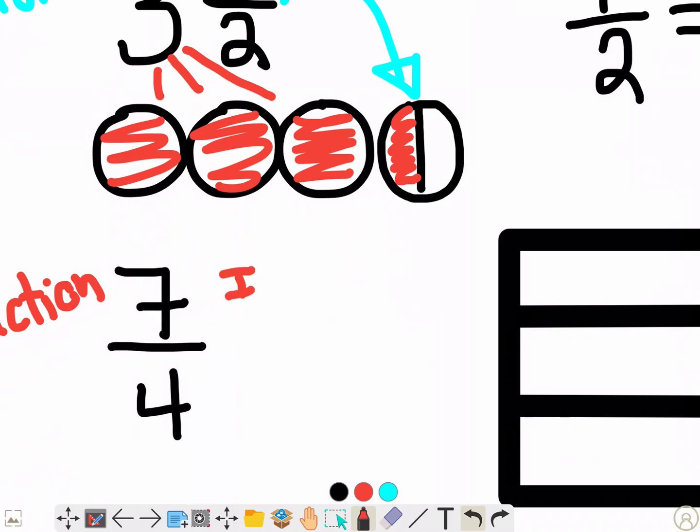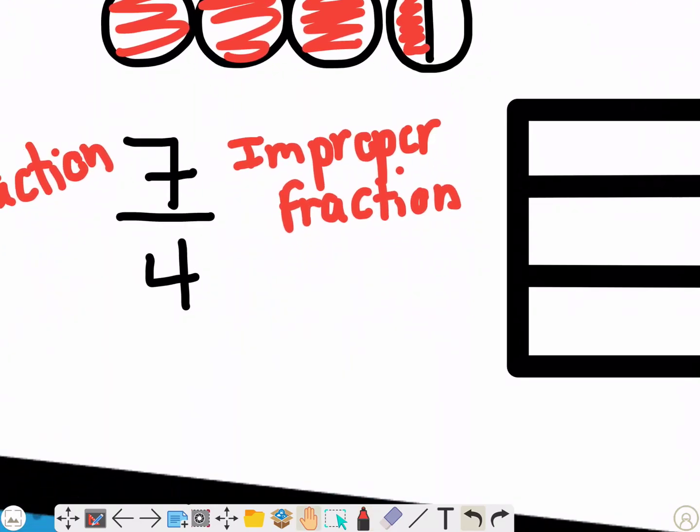This next one is called an improper fraction. Now the reason it's called an improper fraction is because normally your top number, your numerator, is supposed to be smaller than your denominator.